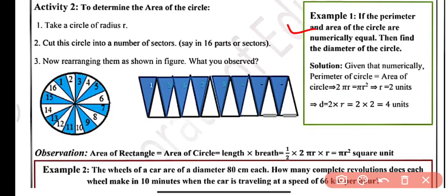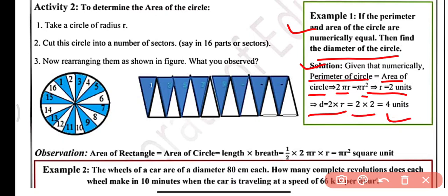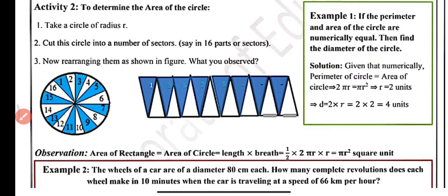Example 1: If the perimeter and area of a circle are numerically equal, find the diameter. We are given that perimeter equals area, so 2πr equals πr². After simplifying, r equals 2 units. So diameter equals 2 × 2 = 4 units.